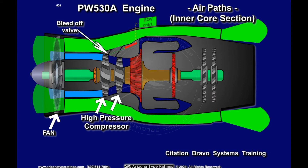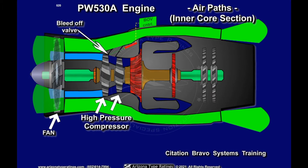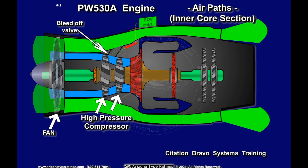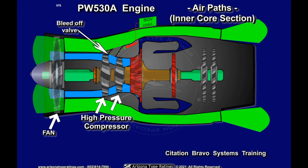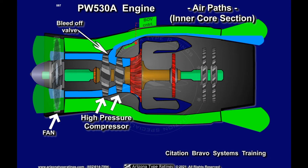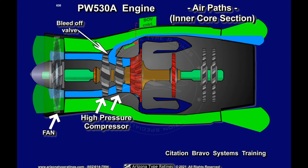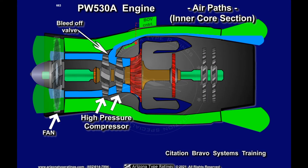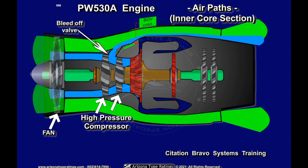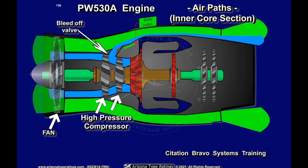The bleed-off valve is located between the fan and the centrifugal compressor. The bleed-off valve is fully open below about 70% N2, begins closing above 70% N2, and is fully closed at about 90% N2. This valve unloads the high-pressure compressors, allowing surge-free operation of the engine at all power settings and altitudes.